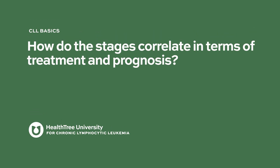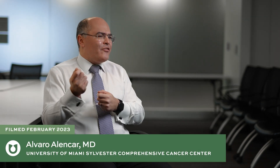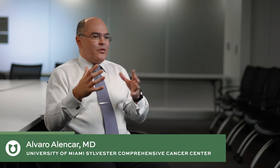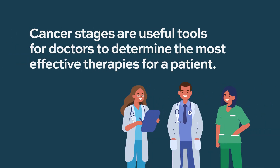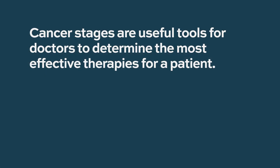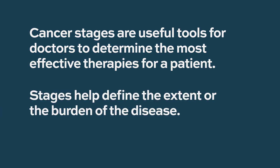How do the stages correlate in terms of treatment and prognosis? A lot of times patients will ask me, do I have metastases? No — it's different because the disease is always everywhere, so it's a little different than staging other cancers. But staging is still important because it guides us on what we're going to do. For example, with breast cancer, stage 1 you might just do surgery; stage 2, you may do surgery and radiation. Staging defines the extent or burden of the disease.